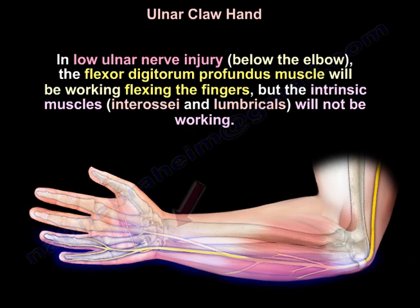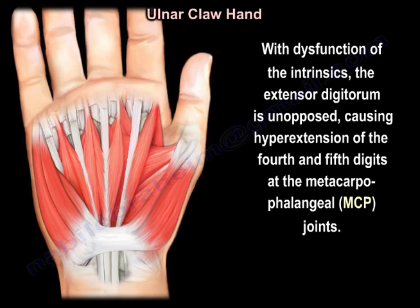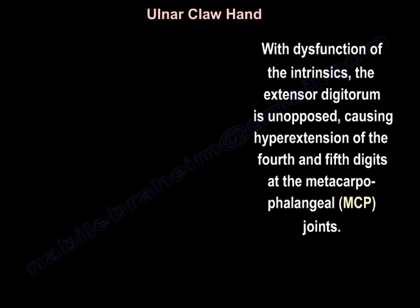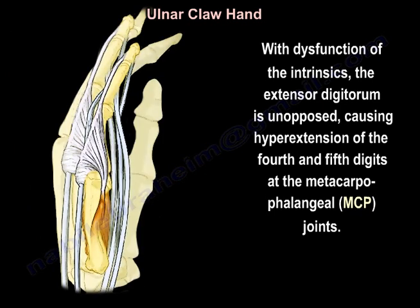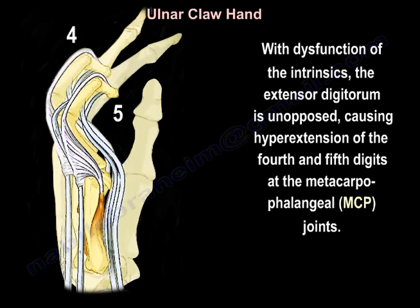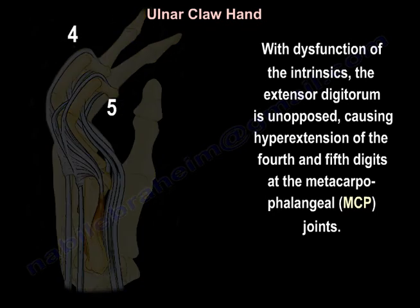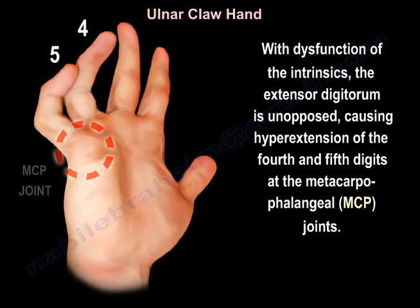The ulnar nerve also innervates the ulnar half of the flexor digitorum profundus muscle. In a low ulnar nerve injury — below the elbow — the profundus muscle will still be working, flexing the fingers. But the intrinsics, the interosseous muscles and the lumbricals, will not be working.